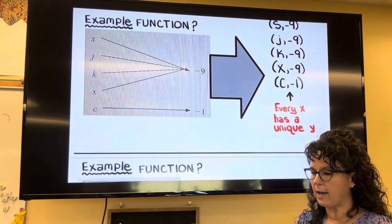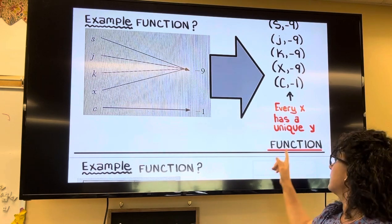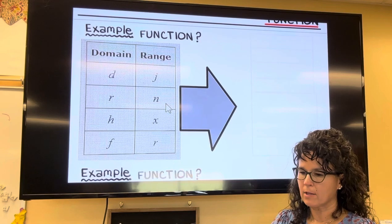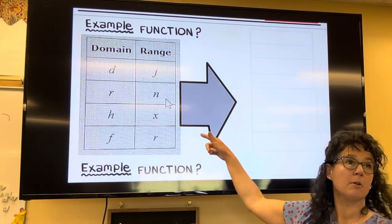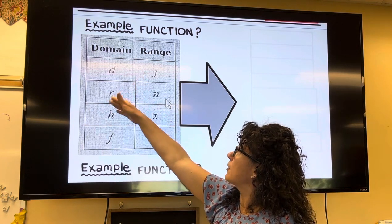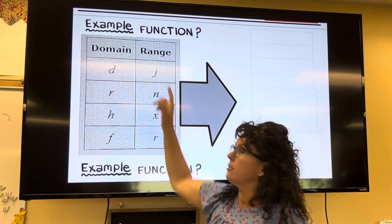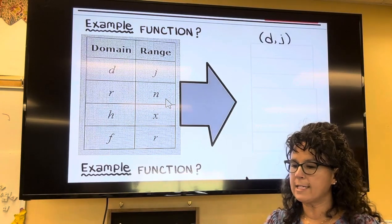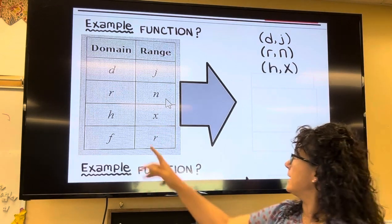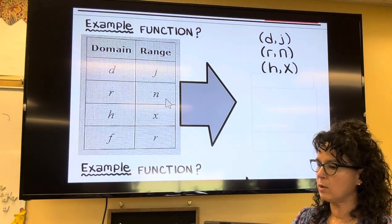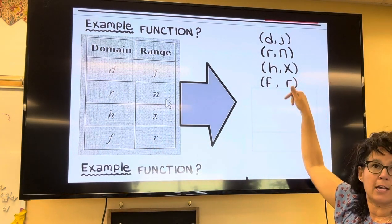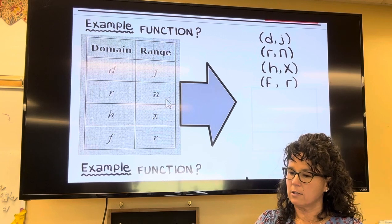So this one, since every x has a unique y, it's a function. Okay, here's another one. This time they gave me a table of values, but the table domain is the left column, range is the right column. So d j, this is the point d comma j. The next point is r comma n. The next one is h comma x, and the last one is f comma r.